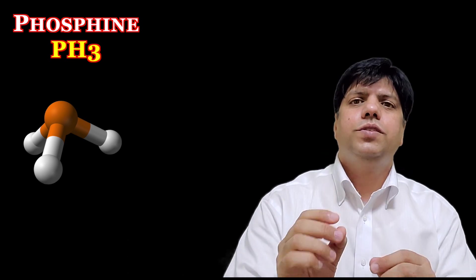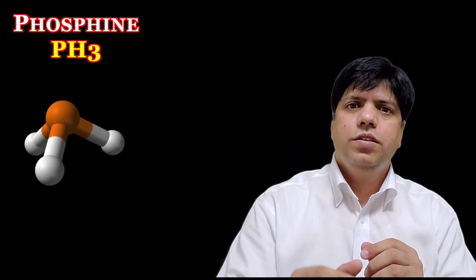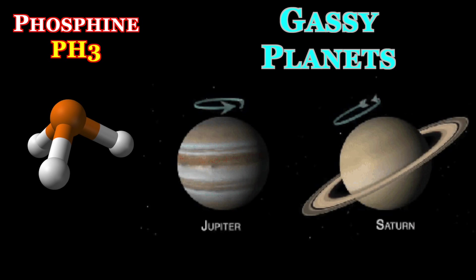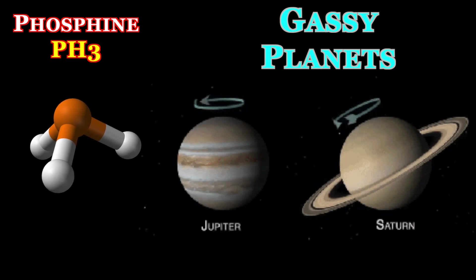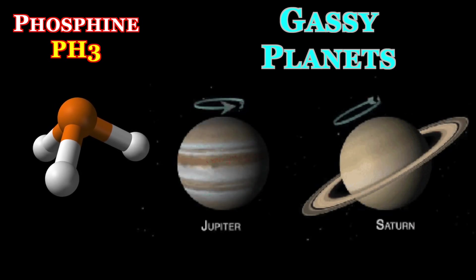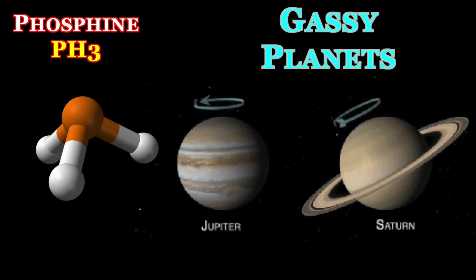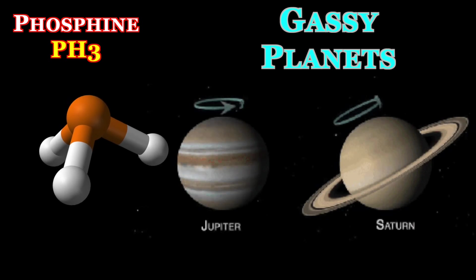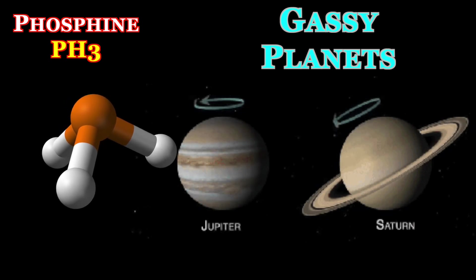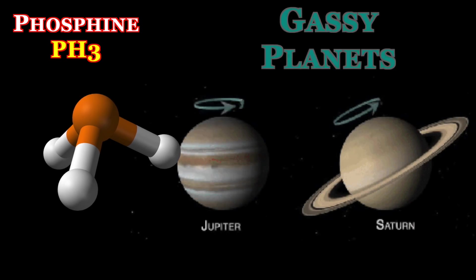Interestingly this phosphine gas is also found to be emanating from big gassy giant planets, Jupiter and Saturn, but the reason is because they have enough temperature and pressure in the middle of them that it creates conditions for natural formation of this gas.